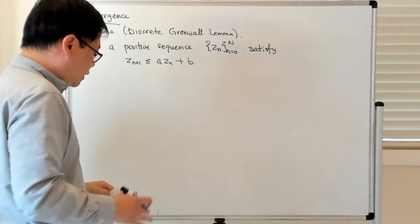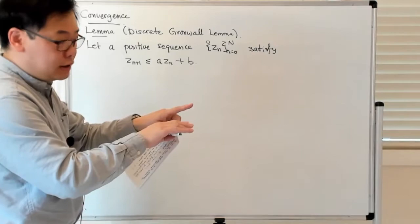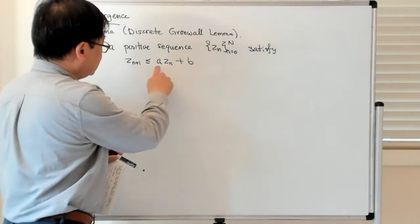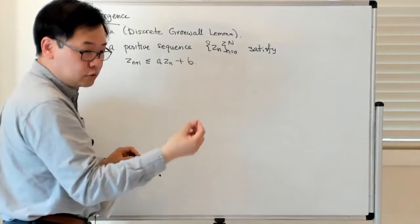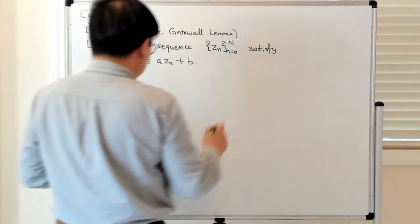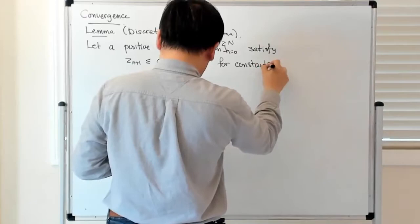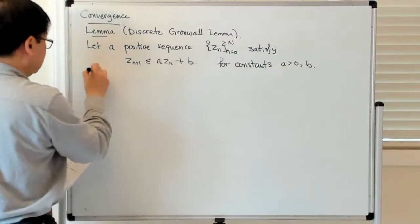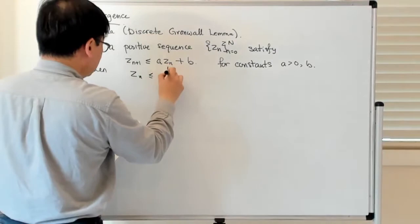The amplification error intuitively has to do with the fact that nearby solutions of the differential equation actually diverge from each other. This thing has to do with the local truncation error which we talked about before. That's where these things are coming from for constants A greater than 0 and some B.